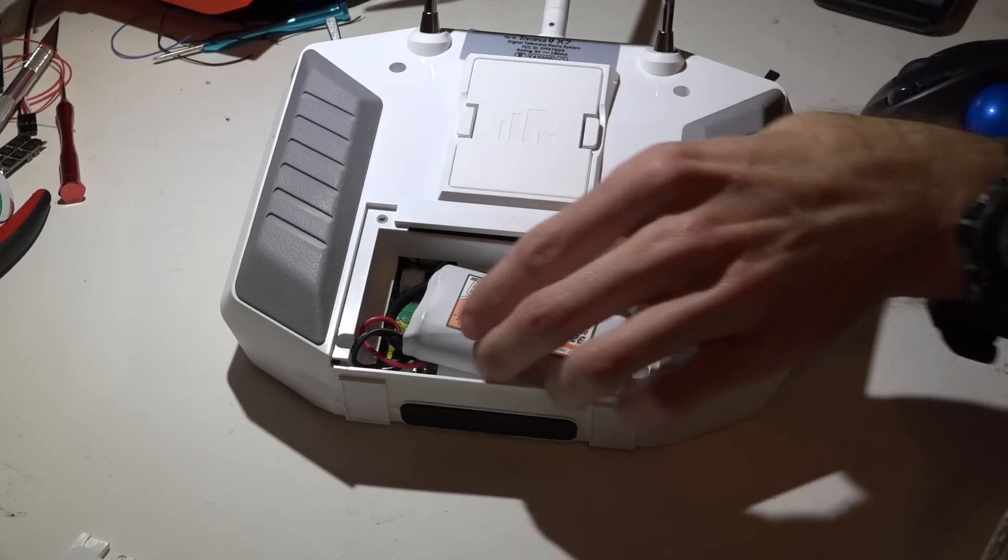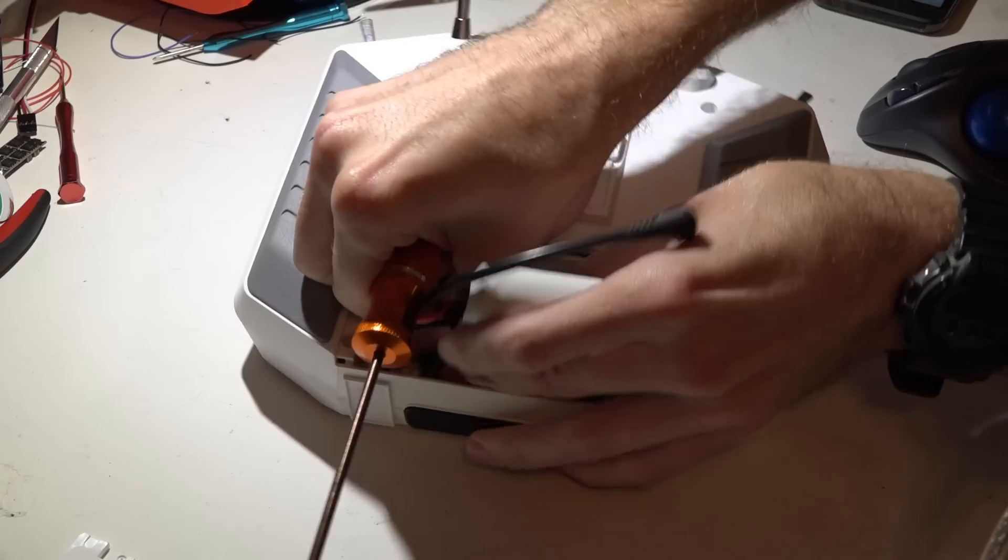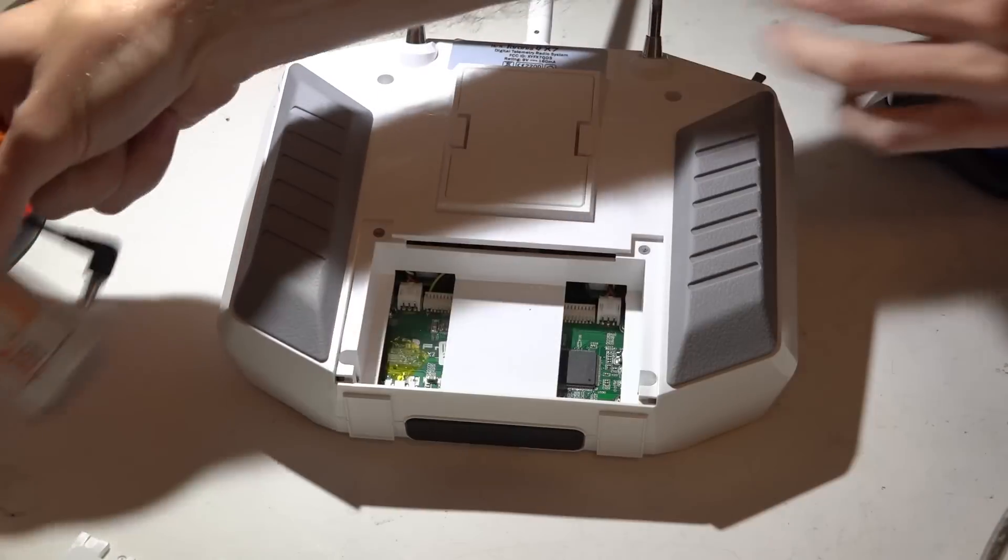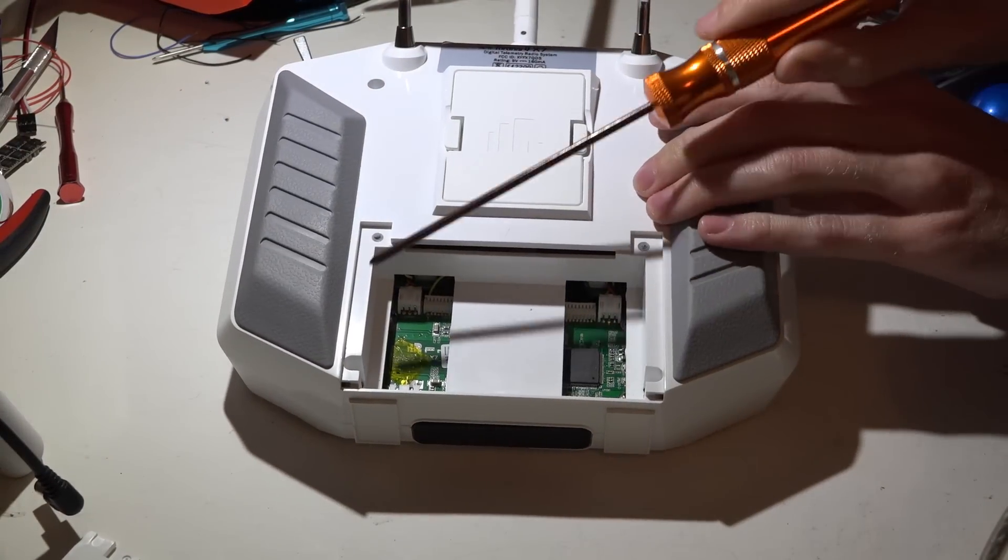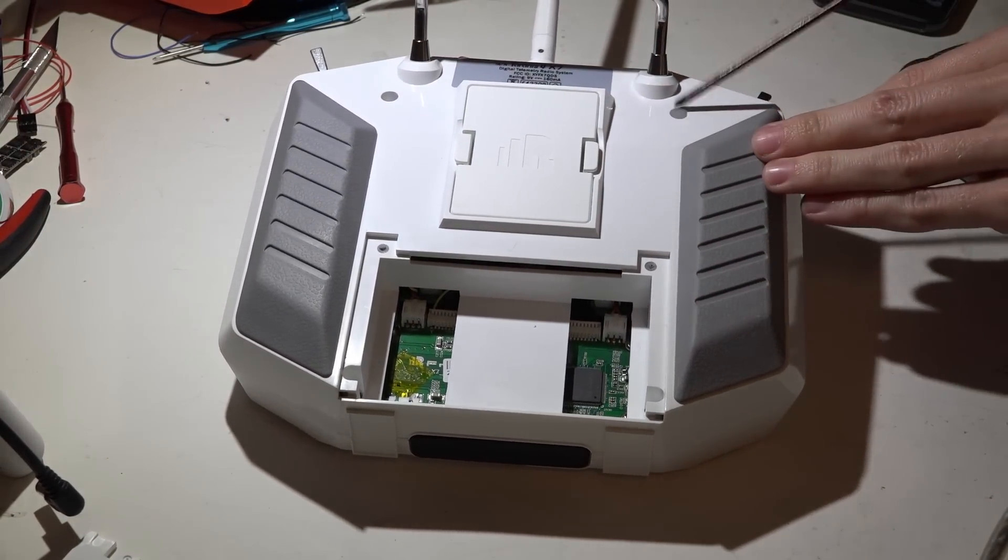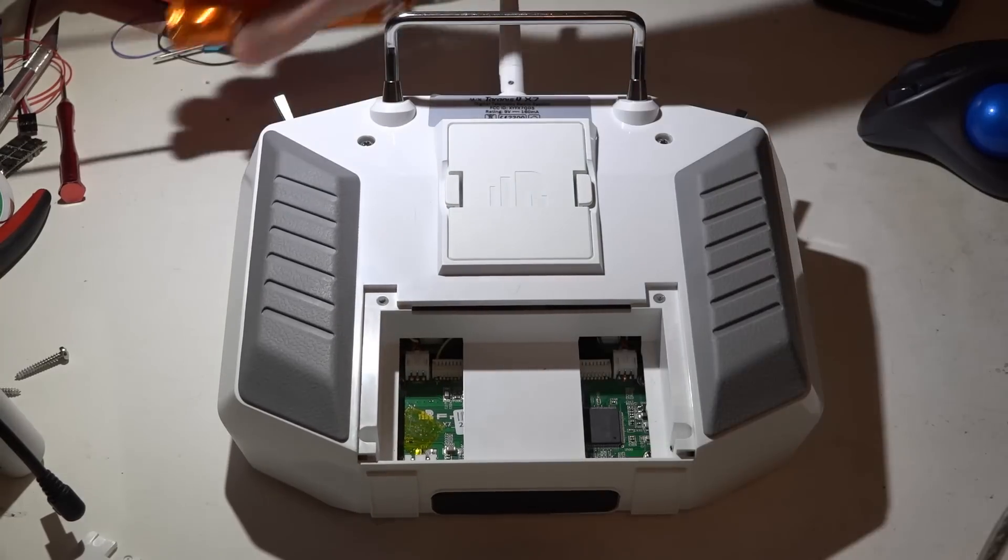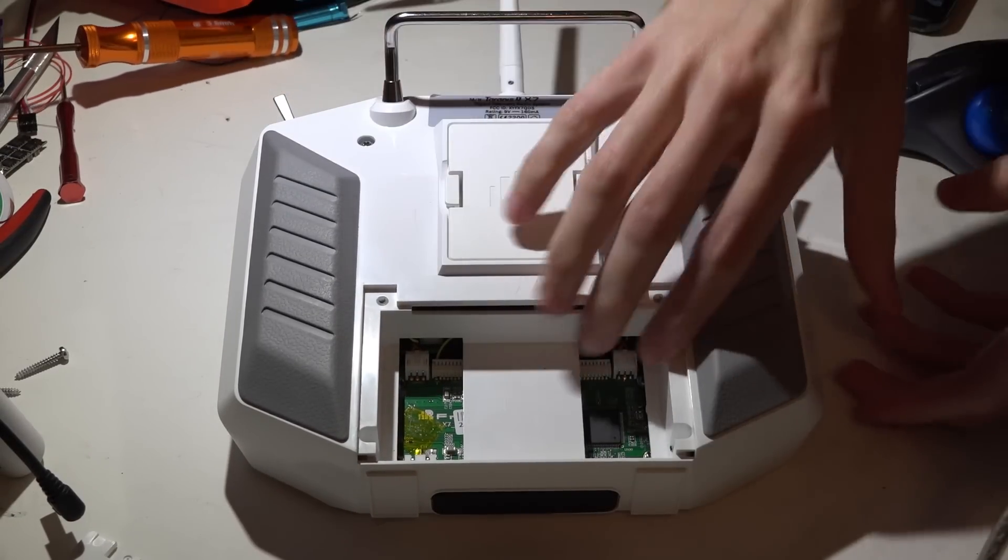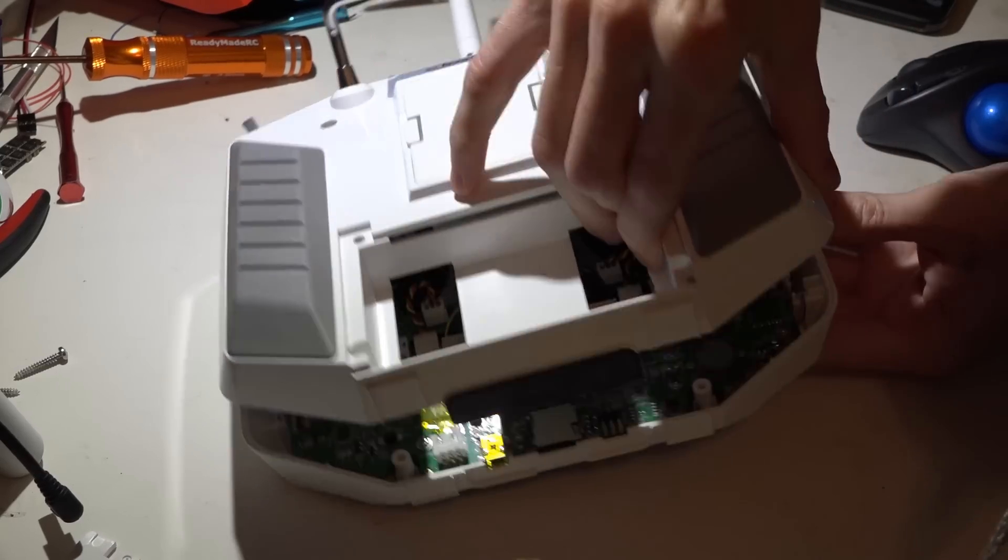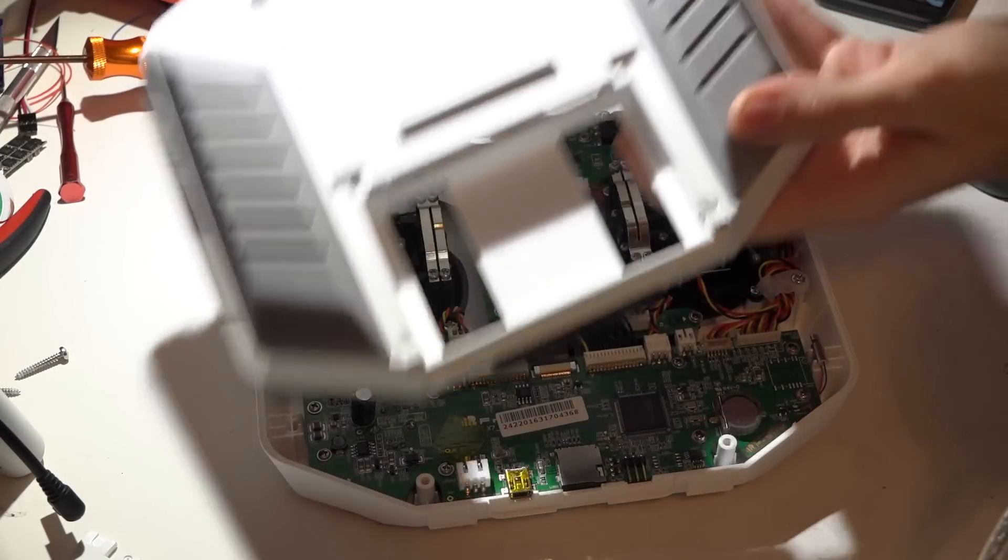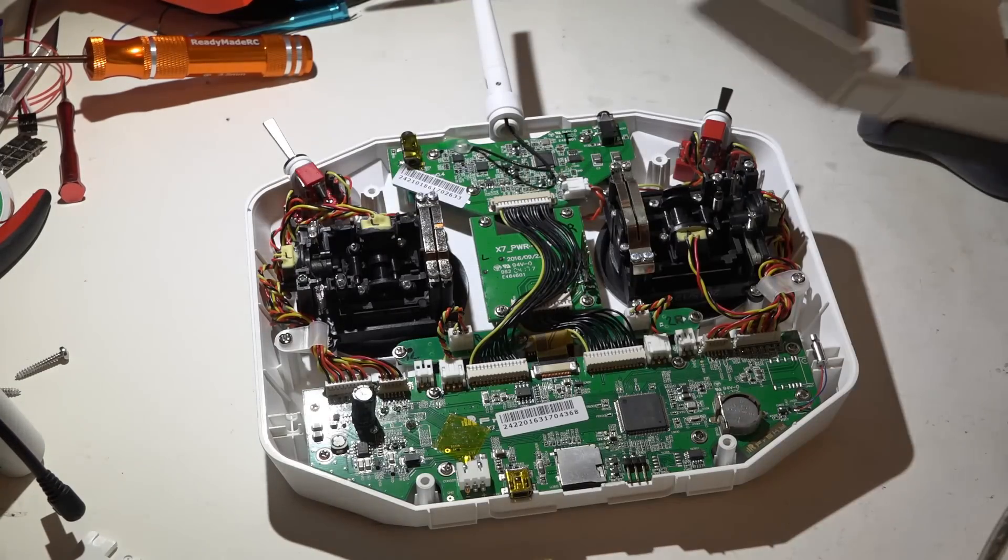We're just going to take the back cover off, remove the battery, and we only have four bolts, two here and two here. Once you have all four bolts loose, this back cover just pulls right off, which is also easier than the X9D.